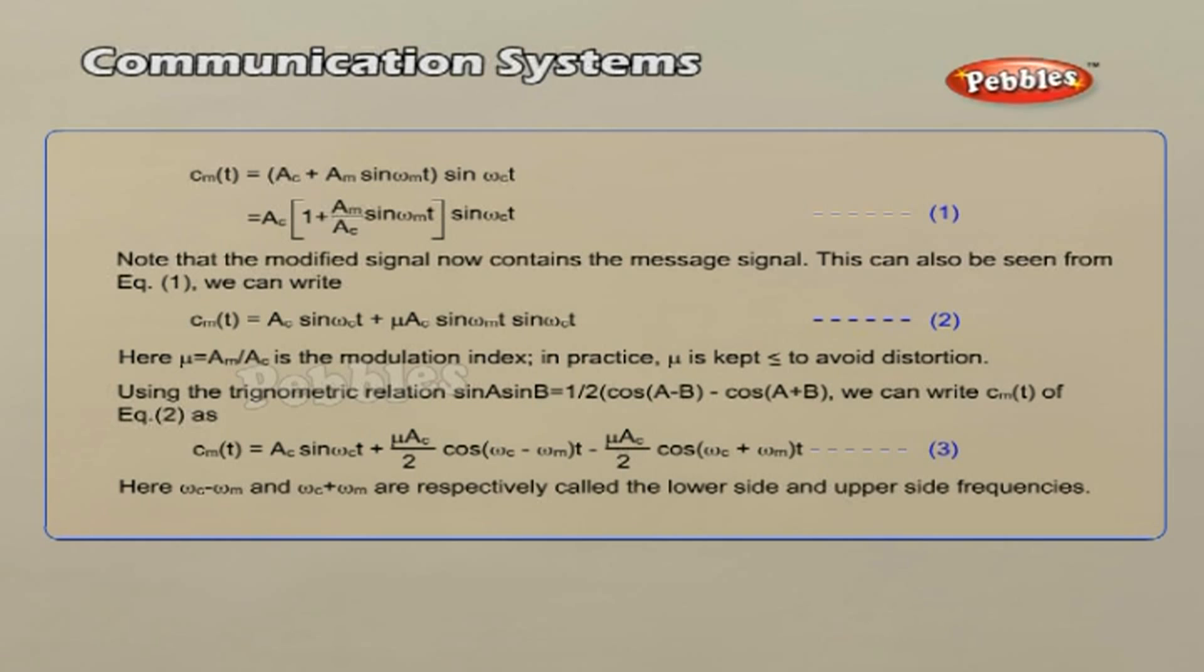And m(t) = Am sin(ωm t) represent the message in the modulating signal, where ωm = 2πfm is the angular frequency of the message signal.